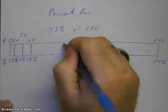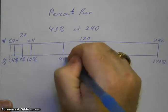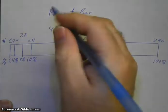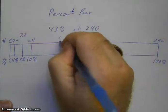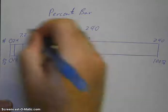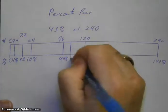Now if I do 40%, that's 4 times 10. 4 times 24 is 96. And then I add the 7.2 to that to get 43%.